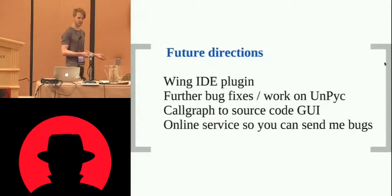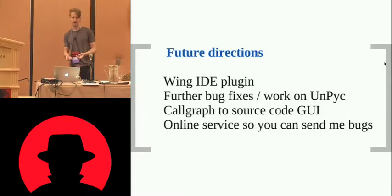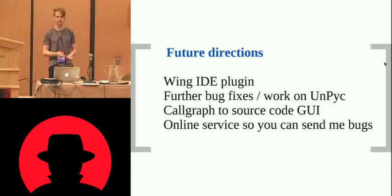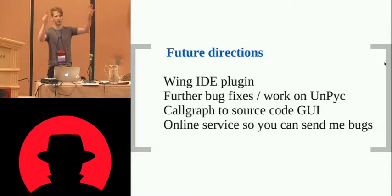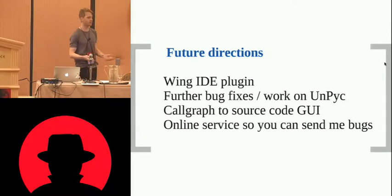Future directions: there's loads of work still to be done. Having a GUI would be nice. Unpyc is good but certainly not perfect — it doesn't implement everything. It would be nice to have a visualized call graph where you can double-click on a block and get to the source code. And obviously, it'll be made into an online service so you can all send me your bugs.